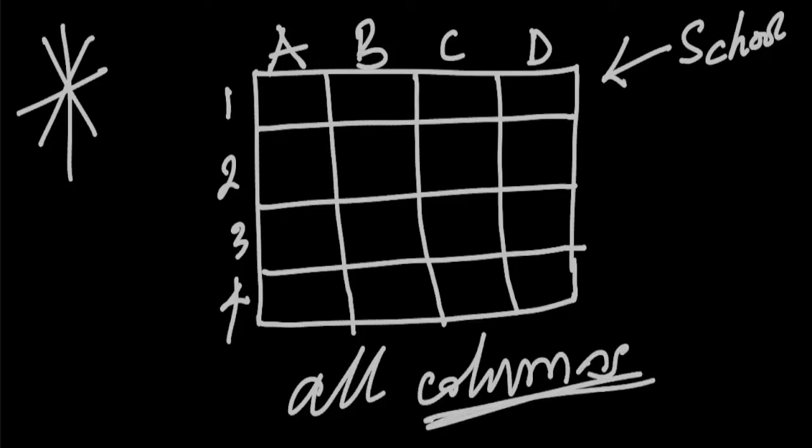That is A, B, C, and D. So if you want to get all the columns in this table, you simply do SELECT * FROM school. When SQL engine sees this, it knows that you are referring to all the columns.